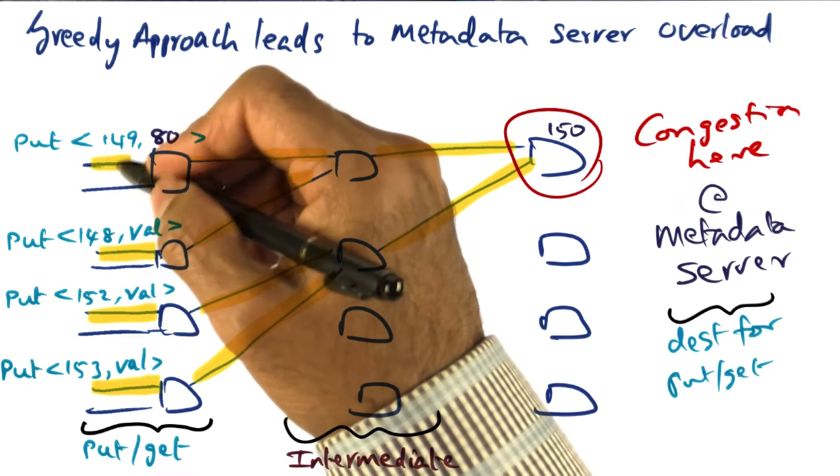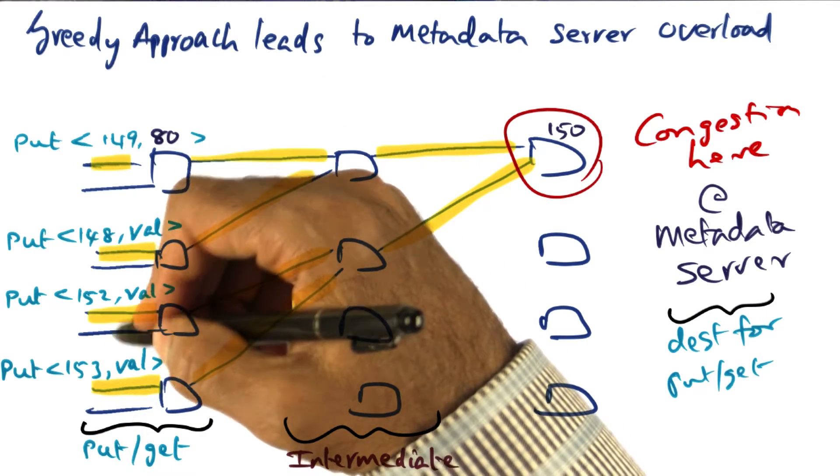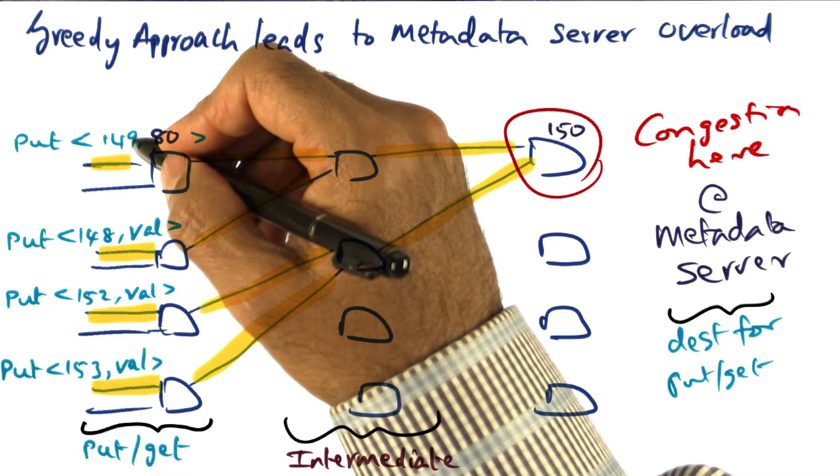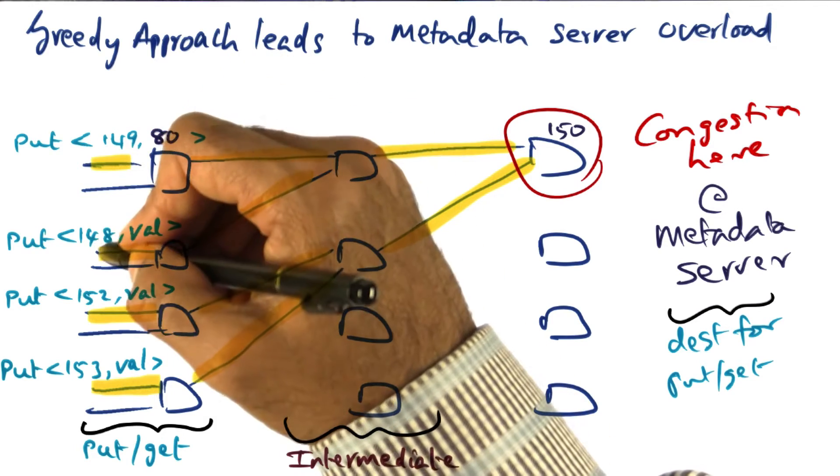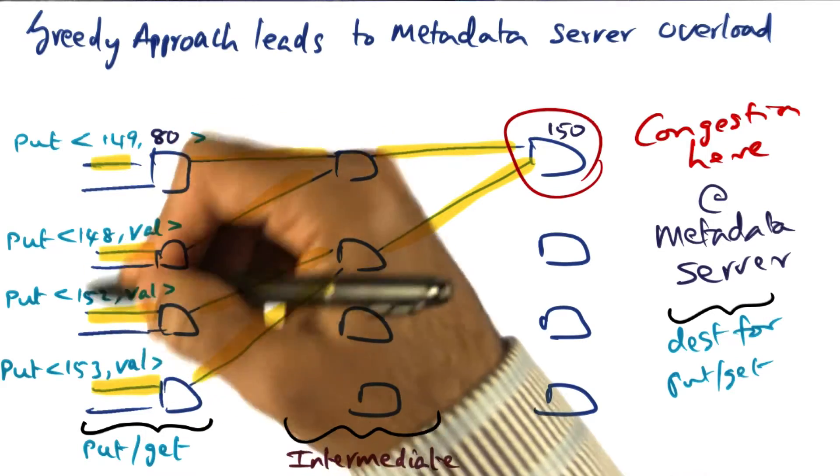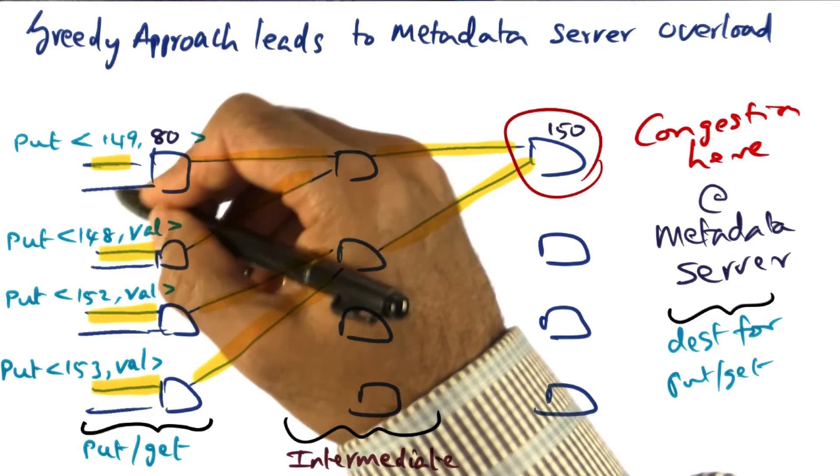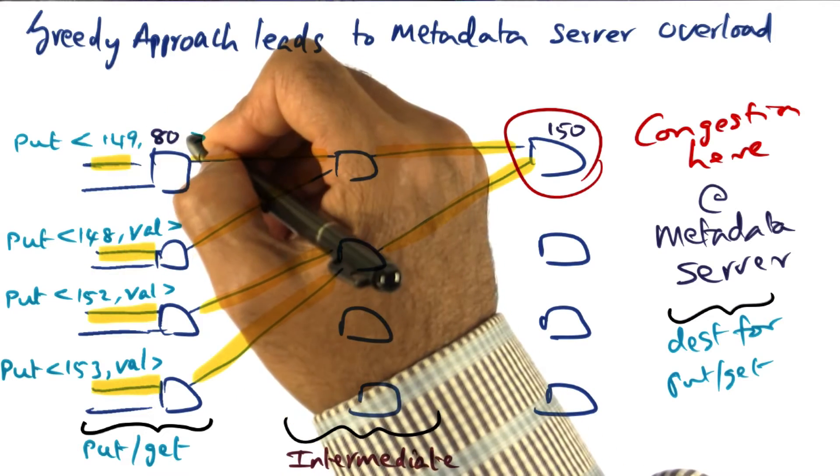Let's say that there's a whole bunch of users that are generating content, and one guy generates content with a key 149. Another guy generates content with a key 148, 152, 153, and so on. And now what they want to do is they want to place this key-value pair.